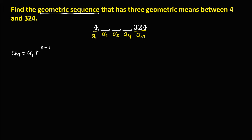First, we need to find the common ratio. Using this formula, we have a sub n — that's 324 — equals a sub 1 — that's 4 — times r to the power n. So n is the number of terms. We have 1, 2, 3, 4, 5 terms, so n is equal to 5, then minus 1.